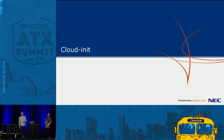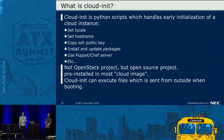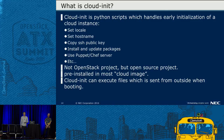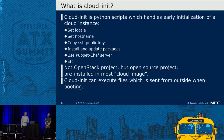Next is cloud-init. Cloud-init is Python scripts which handles early initialization of a cloud instance. For example: set locale, set hostname, copy SSH public key, install and update packages, use Puppet, Chef server. Cloud-init is not an OpenStack project, but an open source project. Cloud-init is pre-installed in most cloud images.